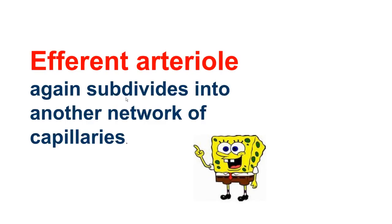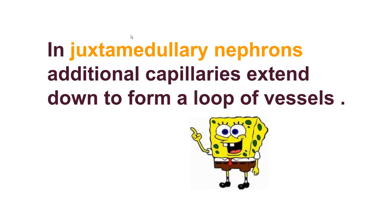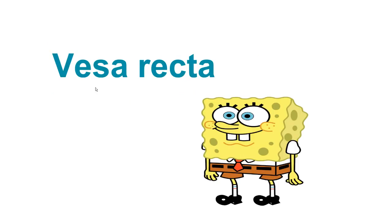The efferent arteriole again divides into another network of capillaries known as peritubular capillaries. These blood capillaries surround the proximal and distal convoluted tubules. In juxtamedullary nephrons — those present at the border of the cortex and medulla — additional capillaries extend down to form a loop of vessels known as the vasa recta. Vasa recta are absent in cortical nephrons.